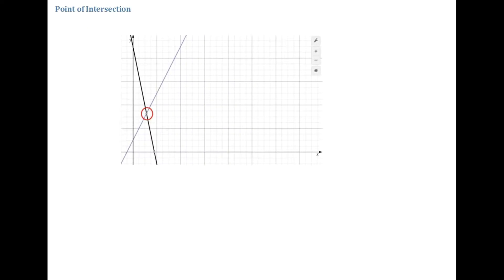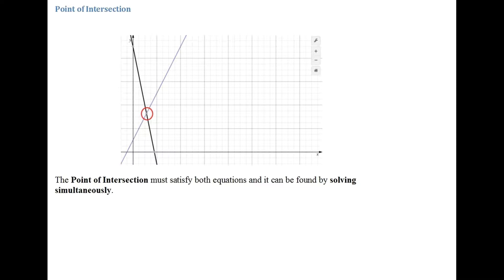In this video I'm going to discuss points of intersection. Points of intersection are points where curves or lines meet or intersect. I have a diagram showing two lines which meet or intersect at a point, highlighted with a red circle. The point of intersection must satisfy both equations, and it can be found by solving the equations simultaneously.